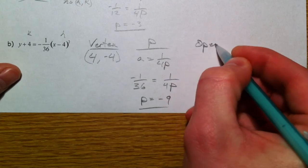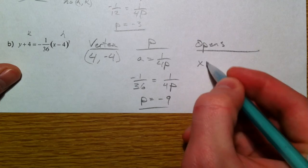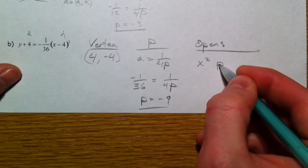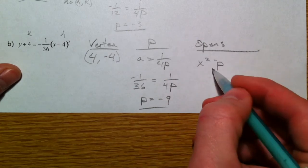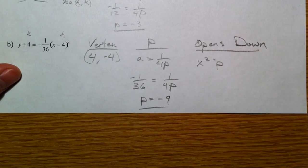And it opens, because it's an x squared equation, and because p is negative. This is the one we know. So it's got to open down. And there you have it.